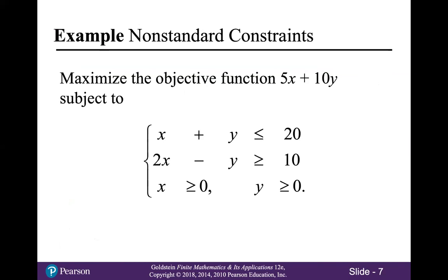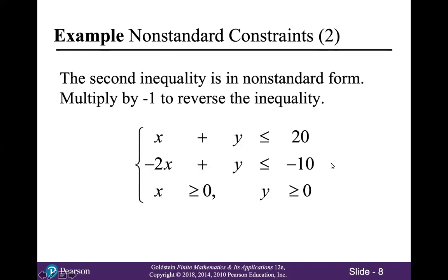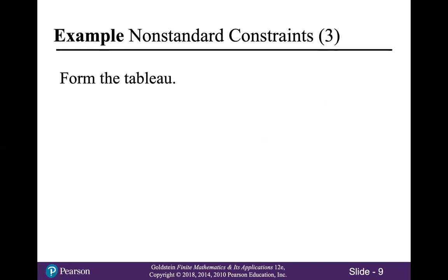Here's an example. We're going to maximize the objective function 5x plus 10y, subject to the constraints: x plus y is less than or equal to 20, 2x minus y is greater than or equal to 10, and x and y are both greater than or equal to zero. This second inequality, 2x minus y ≥ 10, is in non-standard form. So we multiply both sides by negative 1 to get negative 2x plus y is less than or equal to negative 10. Now all inequalities are less than or equal, and we're ready to set up our simplex tableau.